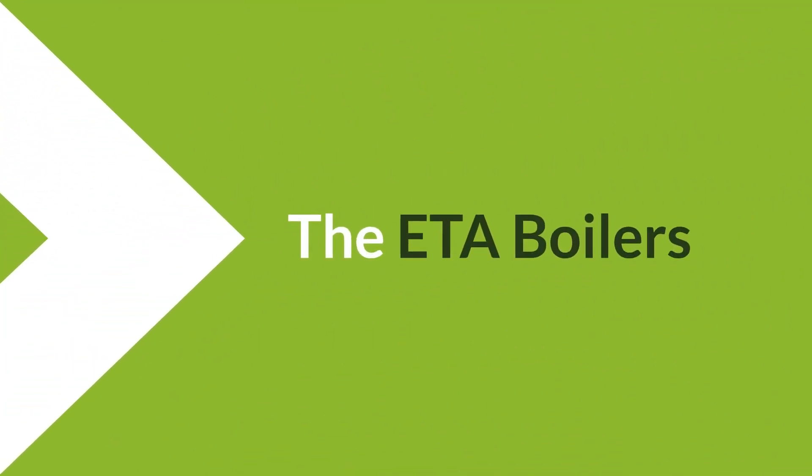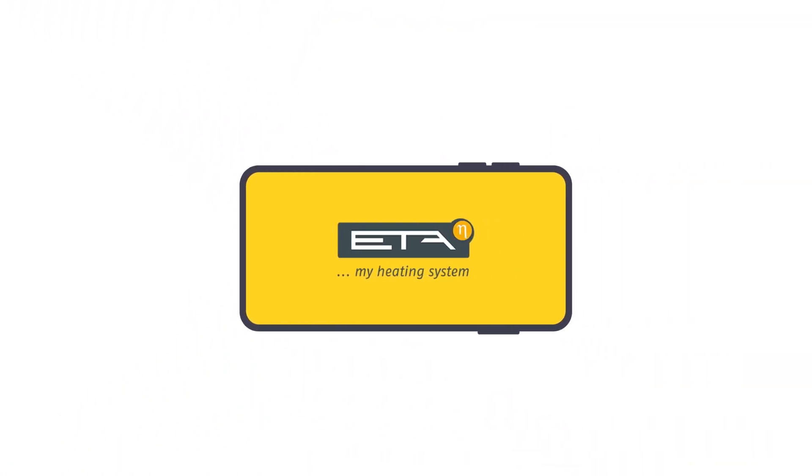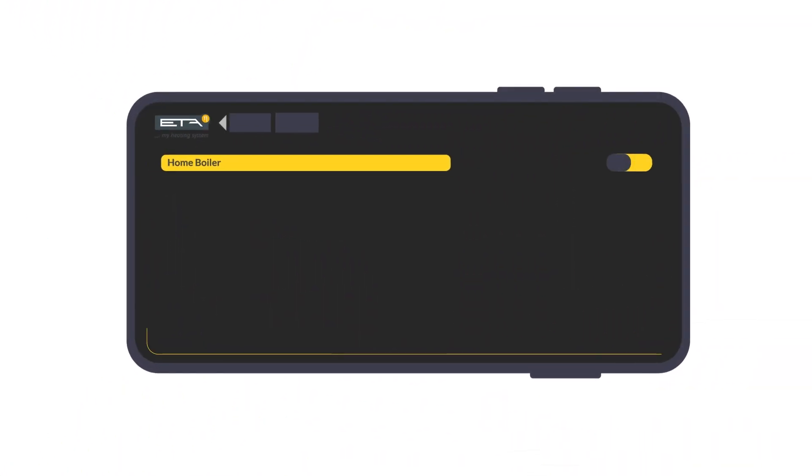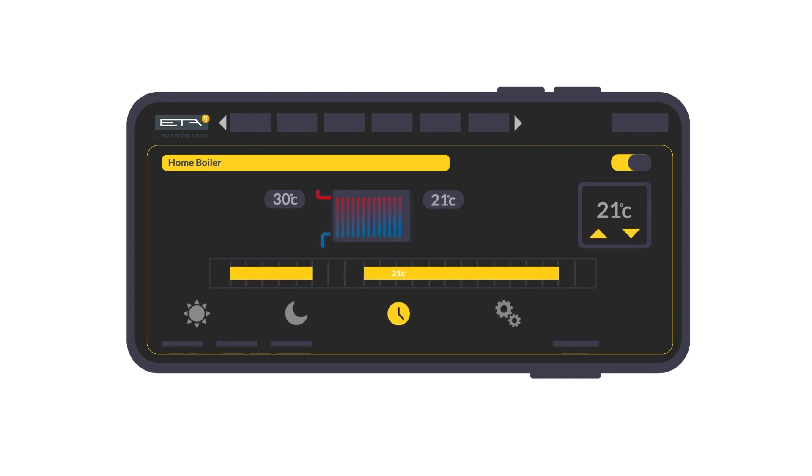The ETA boilers are much more sophisticated than most fossil fuel boilers and have been designed for the future. All ETA boilers come with an easy-to-use app for your smartphone or tablet, which allows you to adjust the temperature of your heating, check fuel levels and even turn on the heating remotely before you get home.